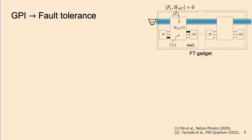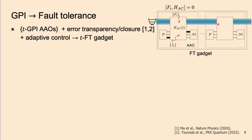This idea of commuting errors through the dynamics is called the error transparency idea. In addition, you also need to apply some adaptive control between different operations to make the whole gadget fault-tolerant. To sum up, if we have GPI operations that are fault-tolerant against ancilla errors, then we can combine them with several other ingredients such as error transparency or more general error closure, and some adaptive control, to reach full fault tolerance. These later ingredients are typically easier to achieve than the GPI condition.